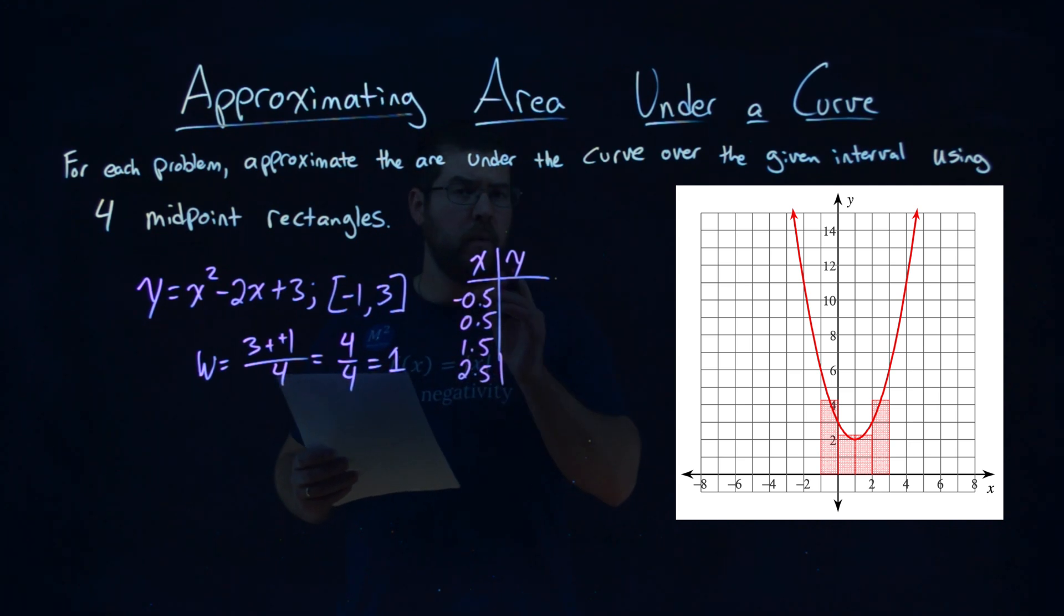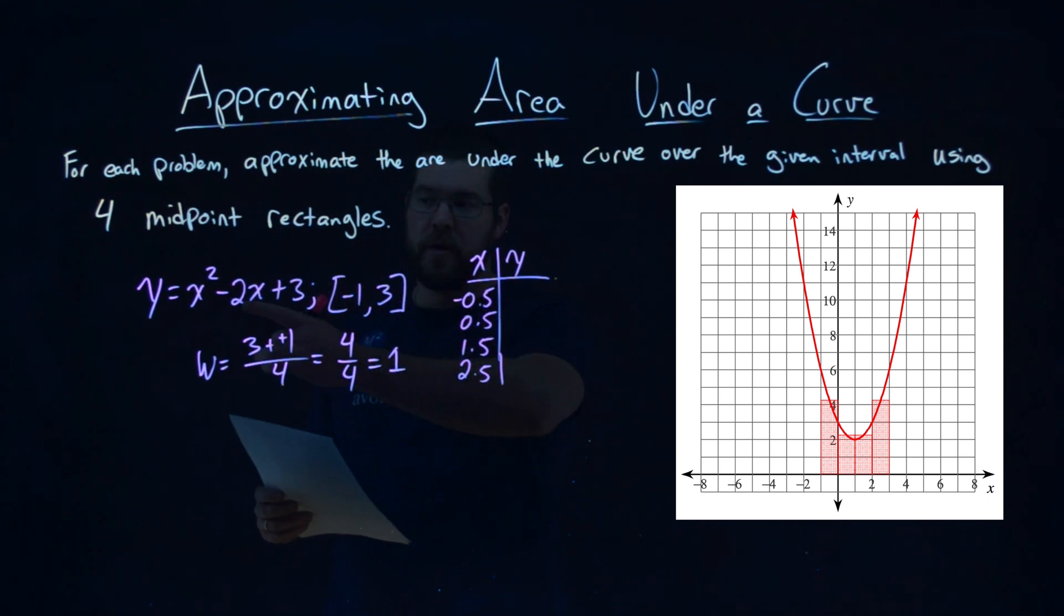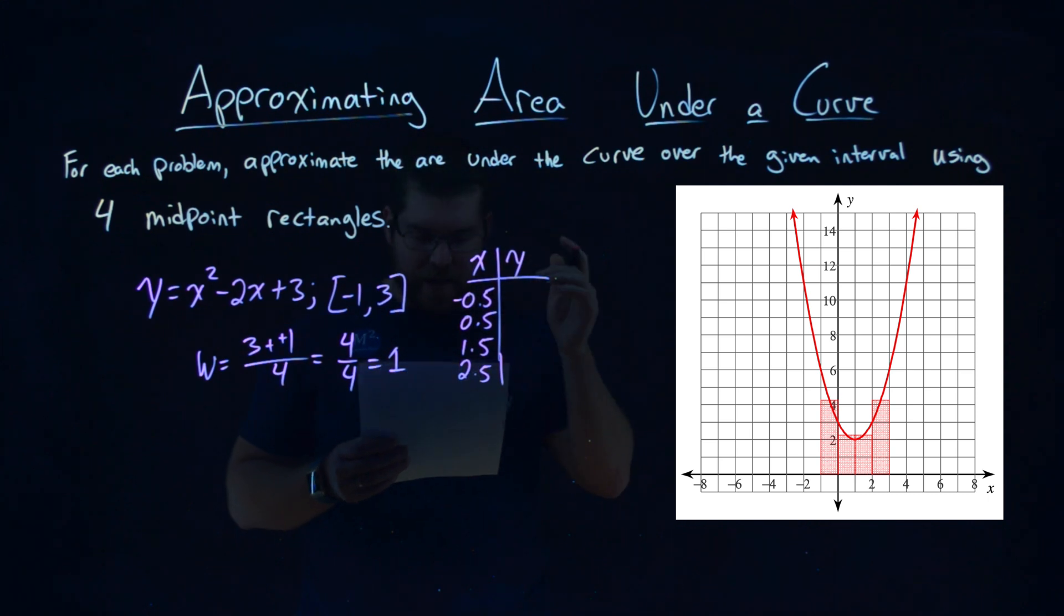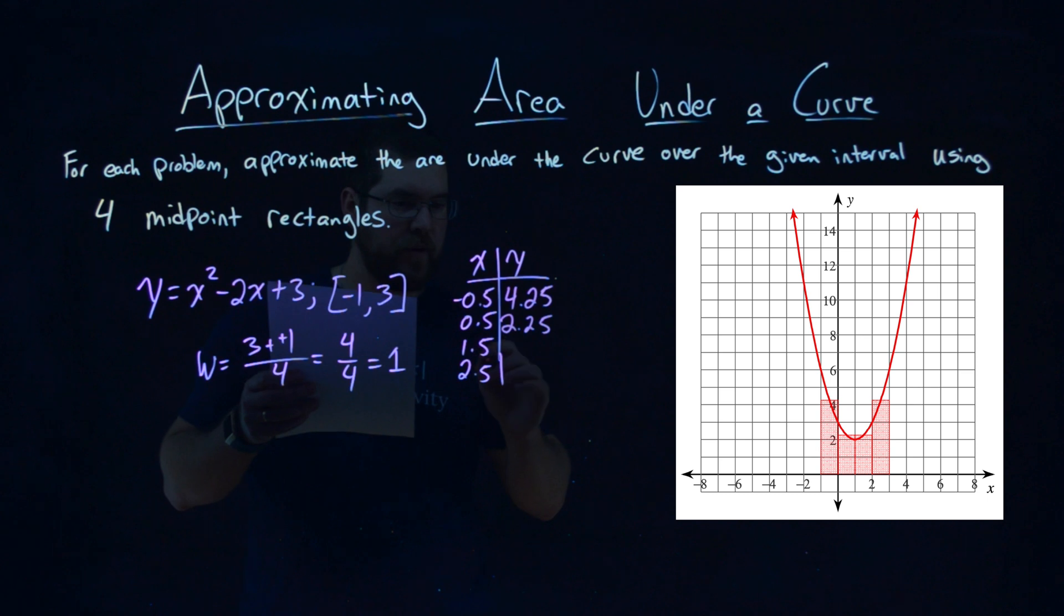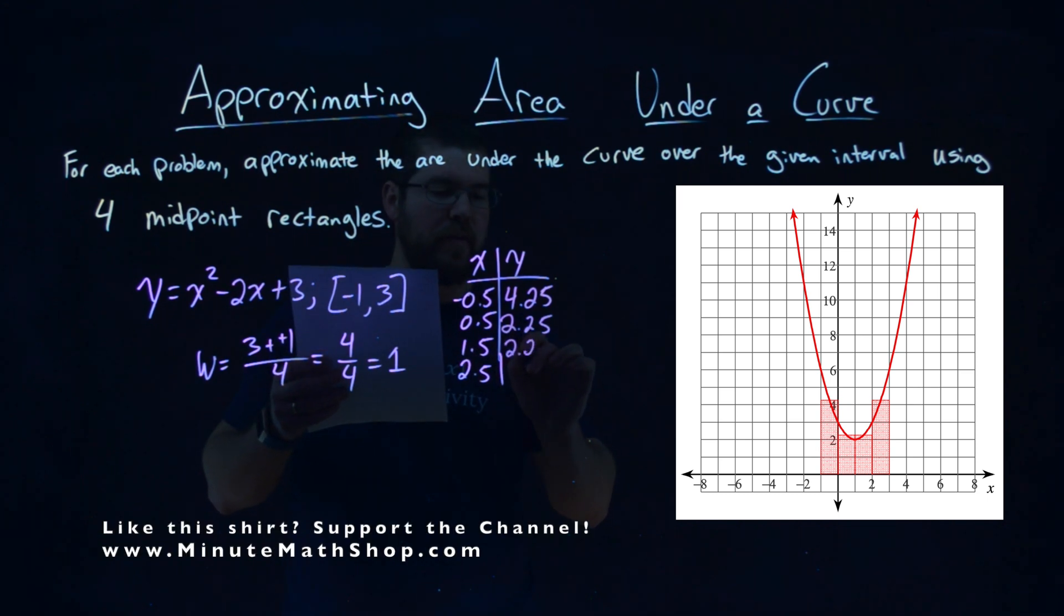We need to find the y-value at that x-value. So we plug each one of these into our original equation, y equals x-squared minus 2x plus 3, and I have done that for you. I got a 4.25 when I plugged a negative 0.5 in, when I plugged a 0.5, I got a 2.25. When I plugged a 1.5 in, I got a 2.25 again, and plugged a 2.5 in, I got a 4.25.